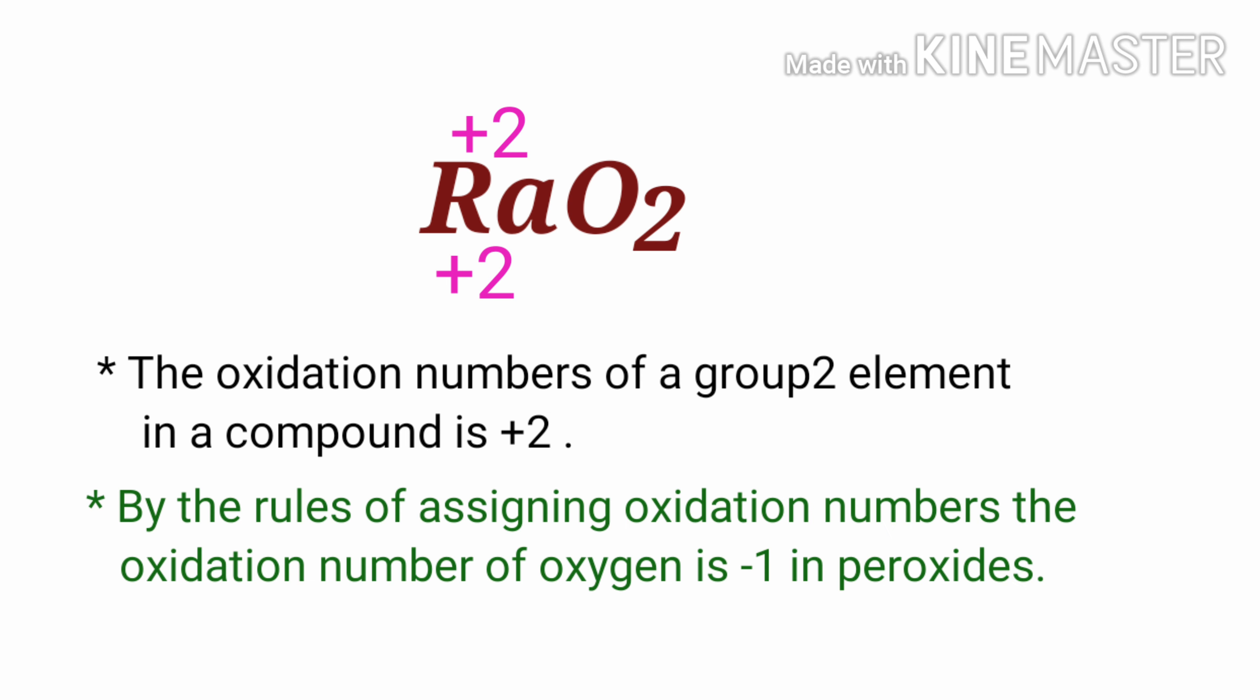By the rules of assigning oxidation numbers, the oxidation number of oxygen is -1 in peroxides. In this compound, two oxygen atoms are present, so the total oxidation number of oxygen is -2.